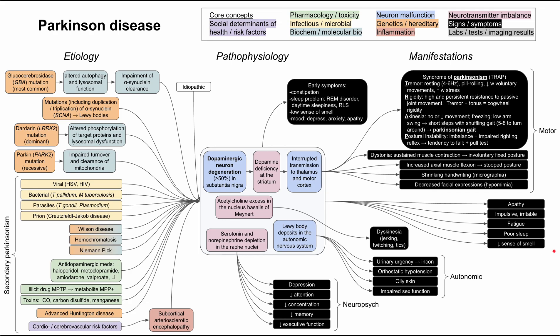Miscellaneous symptoms in Parkinsonism include new-onset apathy, impulsive or irritable behavior, fatigue, poor sleep, and worsening anosmia. That covers the Parkinson's disease mechanism of disease flowchart. I hope this was helpful — thank you for listening.